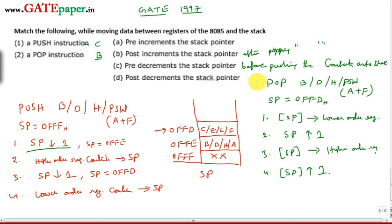So the right answer for this question is 1C and 2B. One important point: while executing the push instruction, even though you are pushing the contents of BC, DE, HL, or PSW, the contents of those source registers are not modified — you are simply copying. Also, push and pop instructions are both single-byte instructions, and no flags are modified by either instruction.